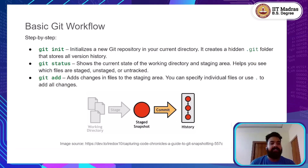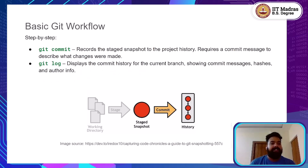You can specify individual files or simply use a period to add all the changes in the current directory. Once your changes are staged, the next step is to commit them. Using git commit, you create a snapshot of your project at that point in time. Commits require a message, and this message should briefly describe what changes you have made. Over time, these commit messages form a useful history of your project's development.